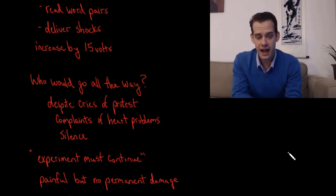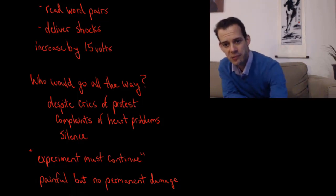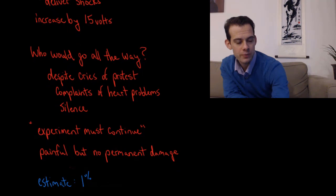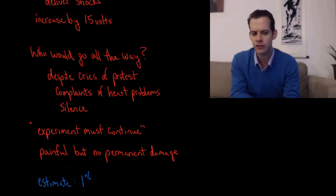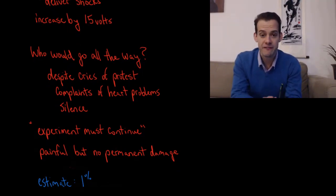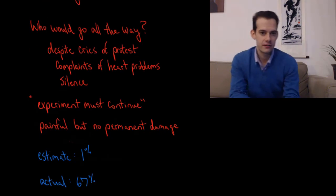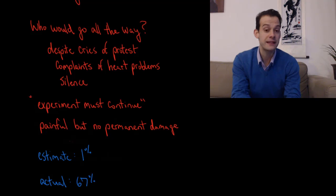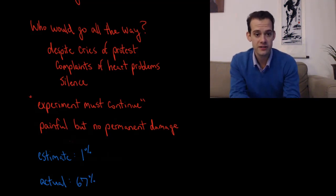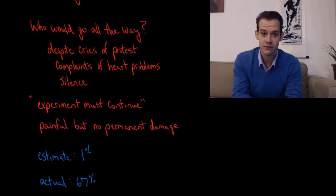So Milgram asked a bunch of psychiatrists who would go all the way? What percentage of participants would go all the way to 450 volts on the machine? They estimated that perhaps 1% of people would be willing to do this, that most people would simply refuse to continue the experiment. What Milgram actually found was that 67% of his participants went all the way to 450 volts, despite the cries of protest, despite the complaints of heart problems, and despite the eventual silence from the learner.